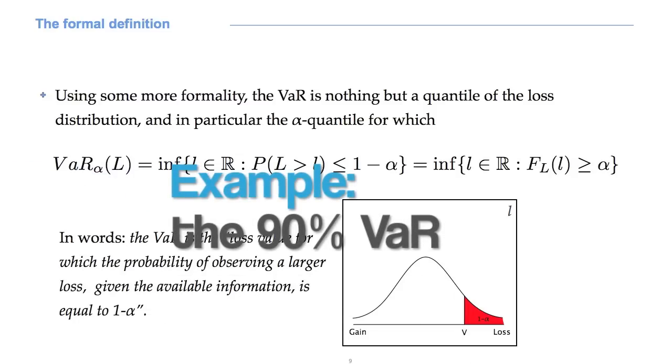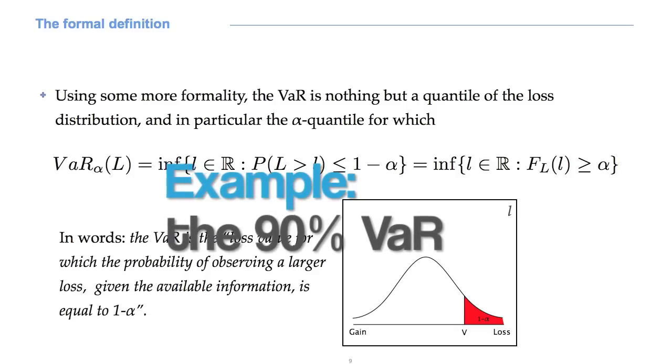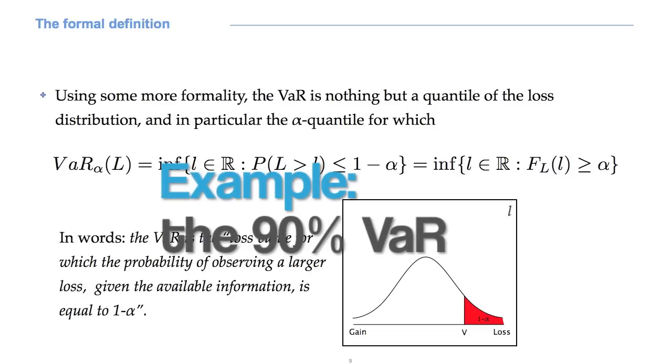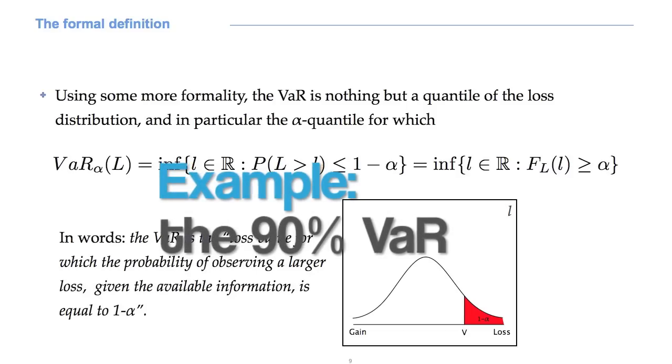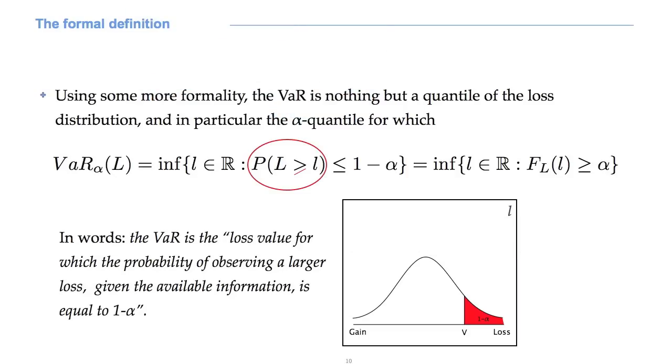Given a loss distribution, the 90% VAR is the threshold loss for which 90% of losses are smaller and only 10% are larger, naturally always with respect to the loss distribution under scrutiny.